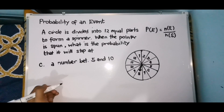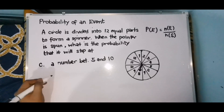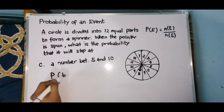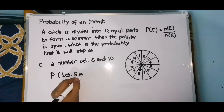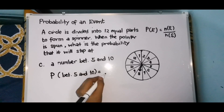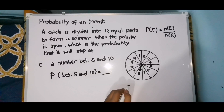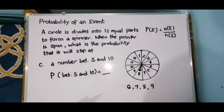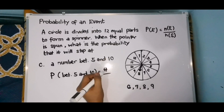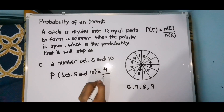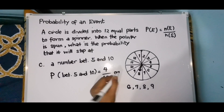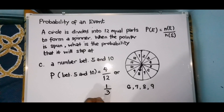Letter C: a number between 5 and 10. So lagay na natin — probability of getting a number between 5 and 10. Let us identify those numbers between 5 and 10: 6, 7, 8, and 9. Those are the numbers between 5 and 10, so there are 4. That is 4 over 12.